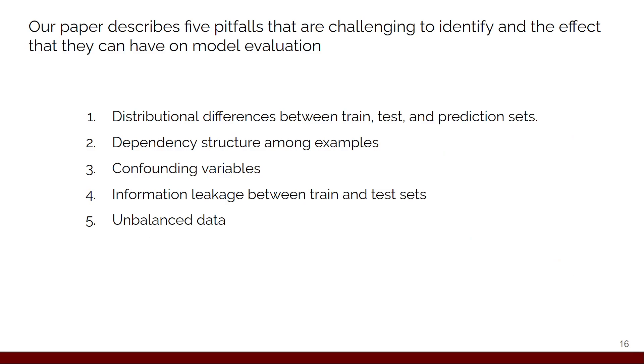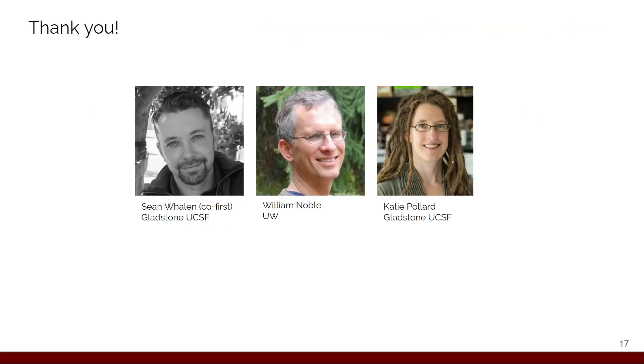So we focused on five pitfalls here. The first is distributional differences between train, test, and prediction sets, then dependency structure among examples, confounding variables, information leakage between the train and the test set, and finally unbalanced data. I'd like to thank my collaborators for working on this project. I really enjoyed having a chance to actually think in depth about what these pitfalls were and trying to explain them to others. And thank you for listening.